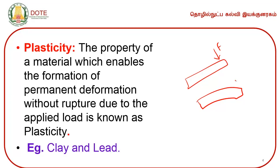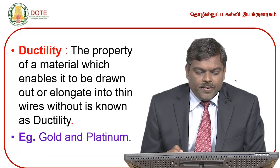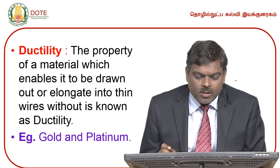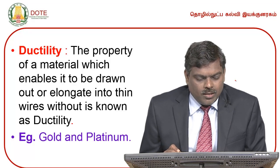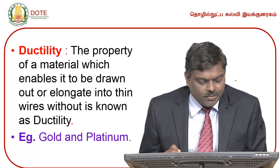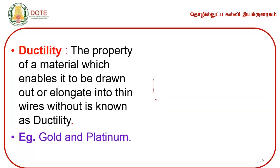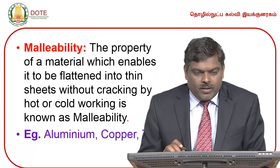Ductility is the property of a material which enables the material to be drawn out or elongated into thin wires without rupture. The best examples are gold and platinum. An object exhibiting ductility can be drawn out into thin wires. Gold and platinum exhibit very good ductility property.